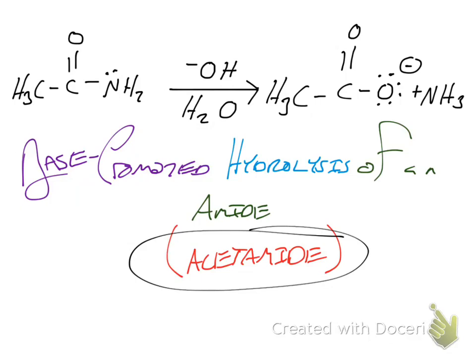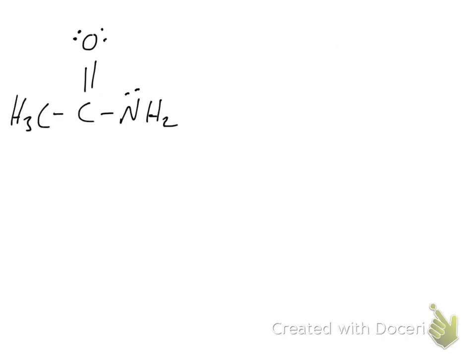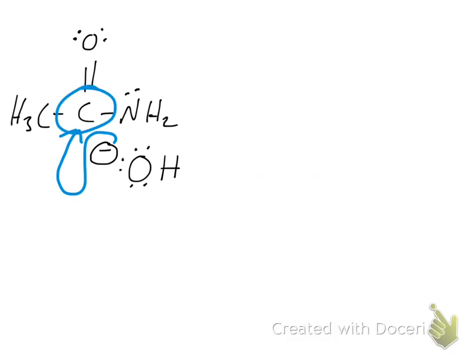So how do we get about doing this? What does the reaction mechanism look like? We have acetamide and our hydroxide ion. The hydroxide has a negative charge. The negative electrons from the hydroxide are going to attack the carbonyl carbon. Why there? Because the more electronegative oxygen on the carbonyl has a partial negative charge, which causes the carbonyl carbon to have a partial positive charge. That partial positive charge attracts the negative charge of the hydroxide group.